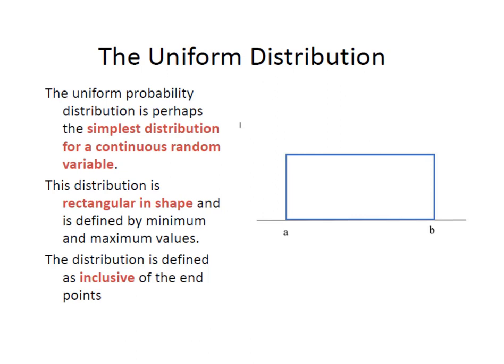The Uniform Probability Distribution is certainly one of the simplest distributions for a continuous random variable. The distribution is always rectangular shaped, and one of the keys is it is defined by these minimum and maximum values. In other words, we know that the random variable x will always exist between a and b.